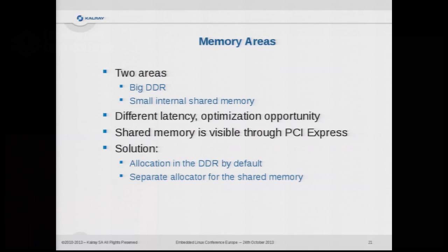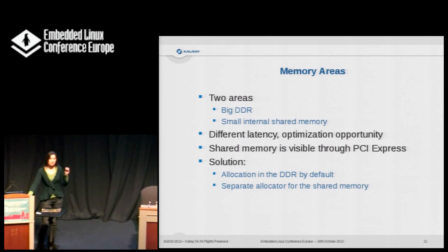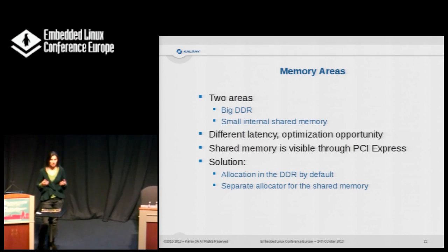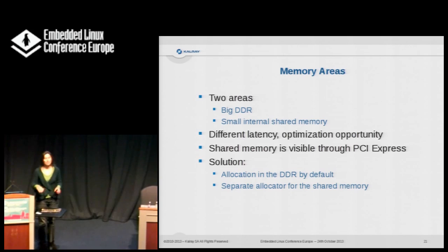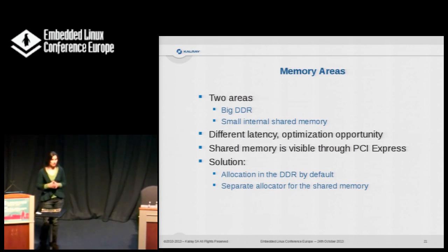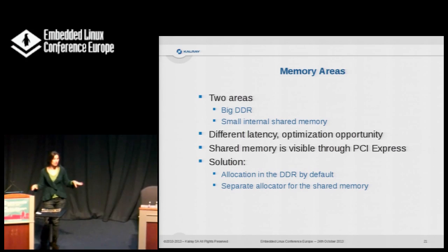Then there's memory access. The processors in the IO clusters have access to two memory zones: a big DDR external memory, and a small memory inside the chip. There is a big latency difference between the two, so you can optimize your code well by putting data or code in fast memory. The shared memory is also visible to the host via the PCI Express interface. By default we do all allocations in the shared DDR, and we have a separate allocator for the shared on-chip memory.